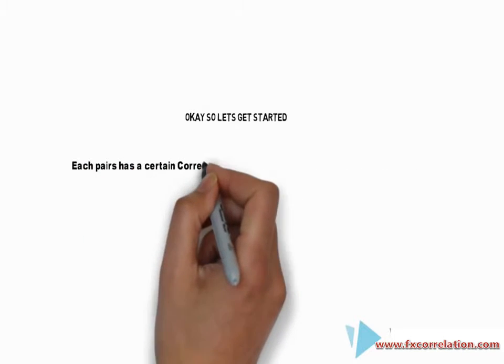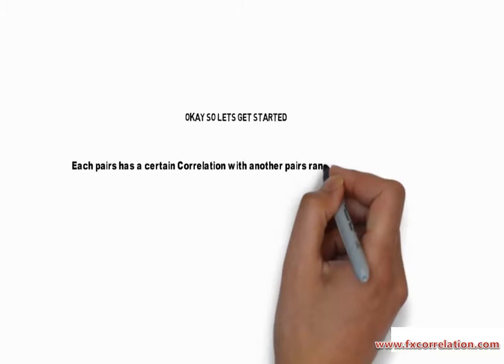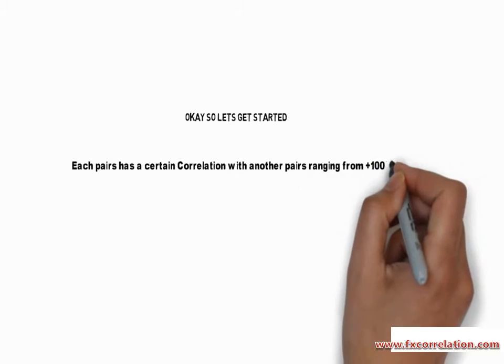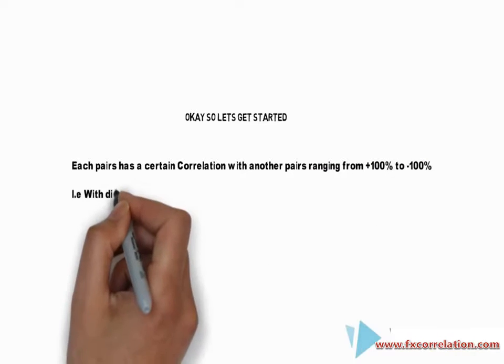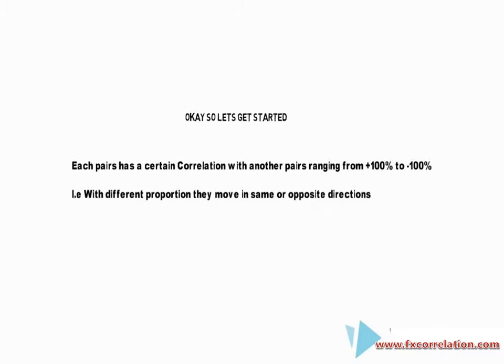Each pair has a certain correlation with another pair which varies from plus 100% to minus 100%. With different proportions, they move in the same or the opposite directions.